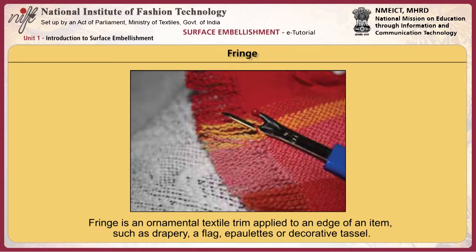Fringe is an ornamental textile trim applied to an edge of an item such as drapery, a flag, epaulets, or a decorative tassel. Fringe originates in the ends of the warp projecting beyond the woven fabric. In this way, a cut piece of fabric would not require hemming in order to achieve an edge that would not unravel. More commonly it is made separately and sewn on, consisting sometimes of projecting ends twisted or plaited together, and sometimes of loose threads of wool, silk, linen, and narrow strips of leather.